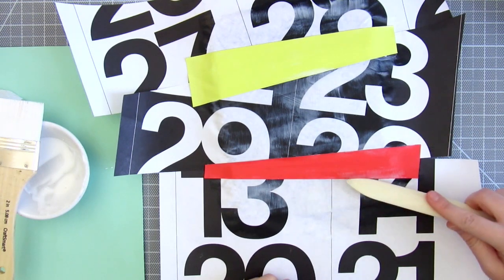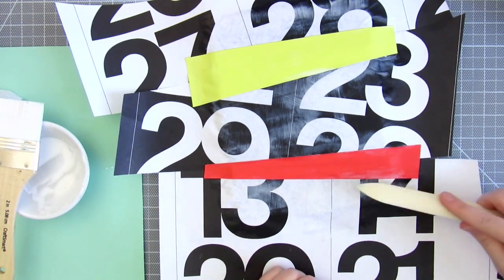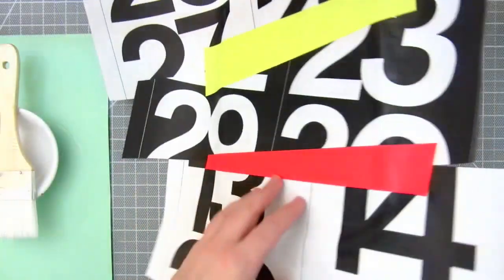If some paper starts to curl up, wait a little while until the glue is tacky and then press it down on the edges. Once the glue is dry,